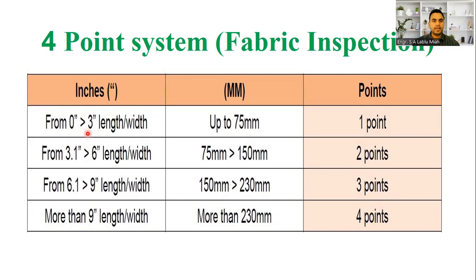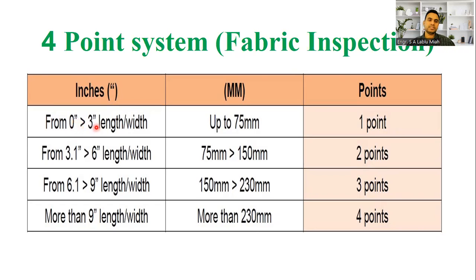For example, a missing yarn — we say the EPI is missing. If a defect is 0 to 3 inches in length, the fabric defect size is 0 to 3 inches.